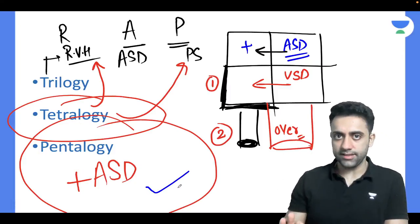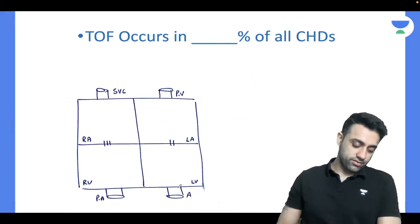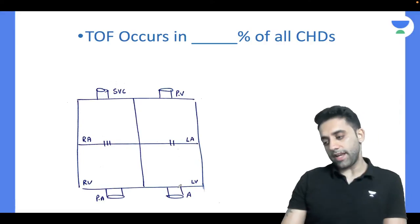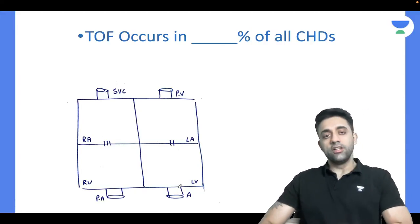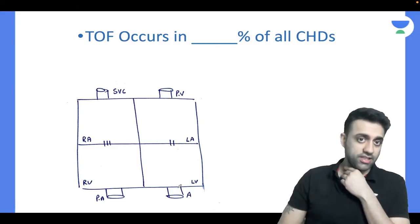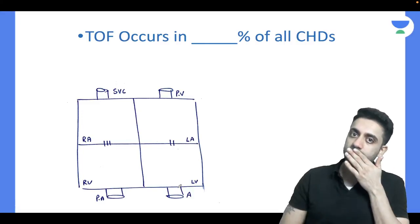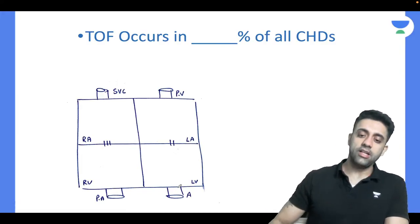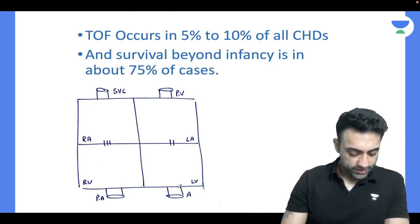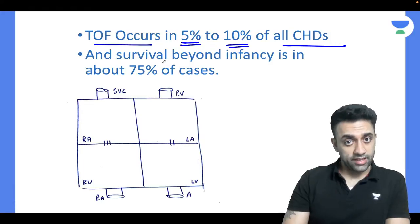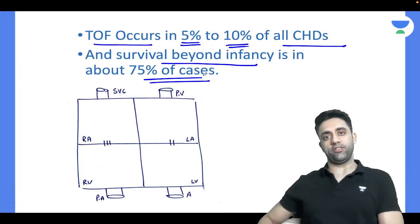Tetralogy of Fallot occurs in five to ten percent of all congenital heart disease. Survival beyond infancy is about 75 percent. Remember these statistics for exam purposes.